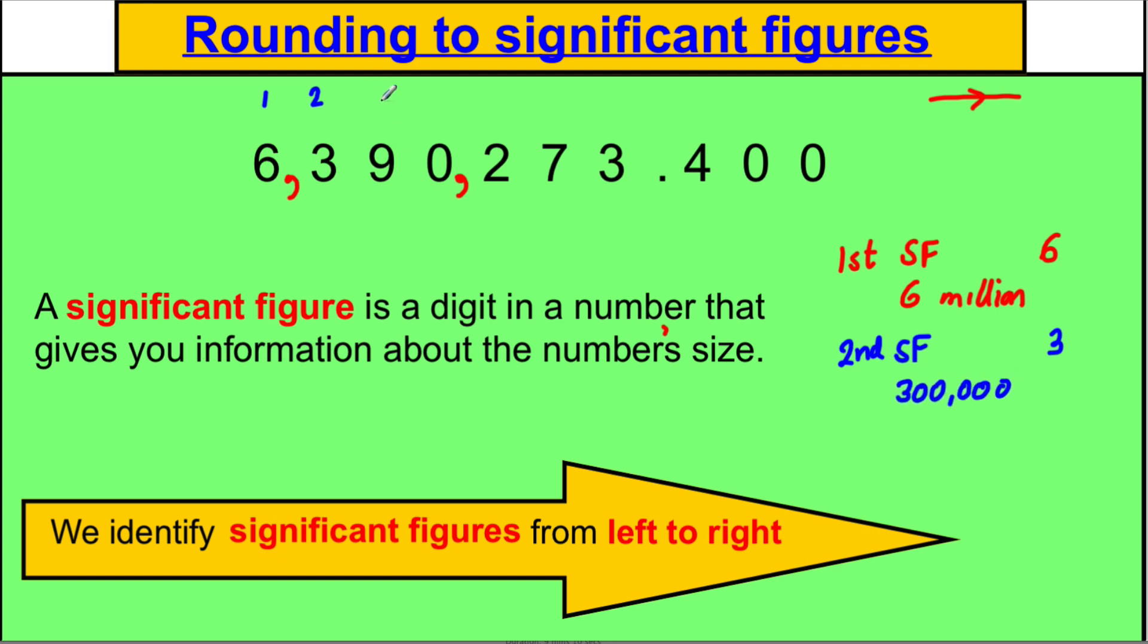And the third significant figure is a 9. It tells you that the number has 90,000 in it. That's the fourth significant figure, which tells you there are 0 thousands. That's the fifth significant figure, which tells you there are 200s. That's the sixth significant figure, which tells you there are seven 10s. And that's the seventh significant figure that tells you there are three 1s in this number.